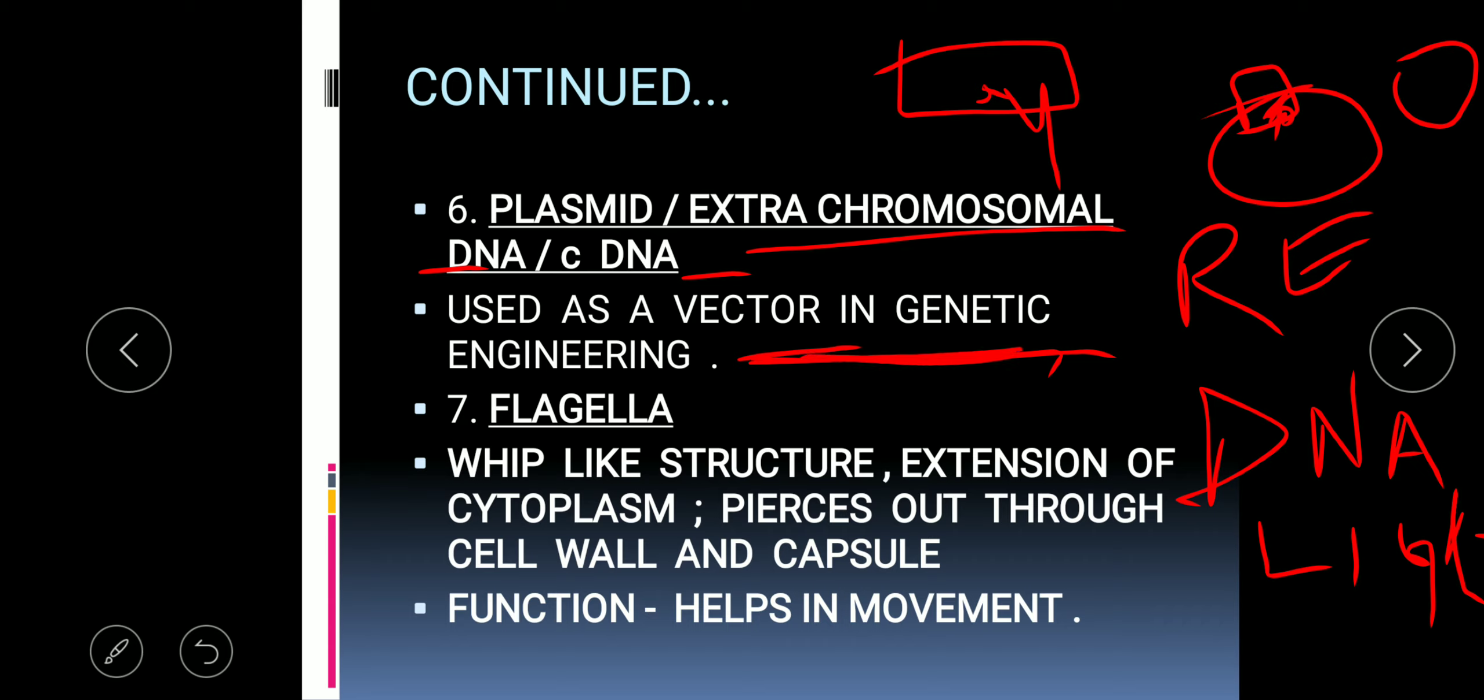For example, insulin deficiency causes diabetes. There are two types of diabetes: diabetes mellitus and diabetes insipidus. Diabetes mellitus is due to the deficiency of insulin hormone.